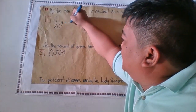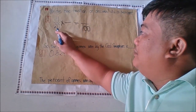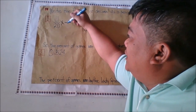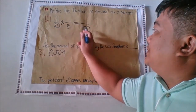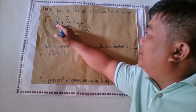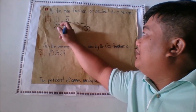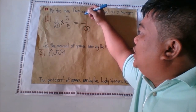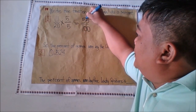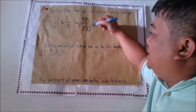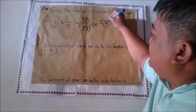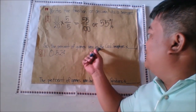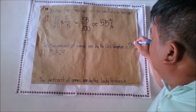Multiply the fraction by 5/5 — since 20 times 5 is 100. You also multiply the numerator: 11 times 5 is equal to 55. Since 100 is the denominator representing percent, we can say 55/100 equals 55 percent. So the percent of the games won by the Coal Smashers is 55 percent.